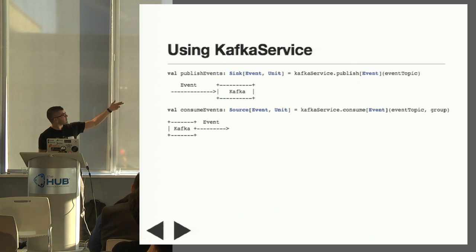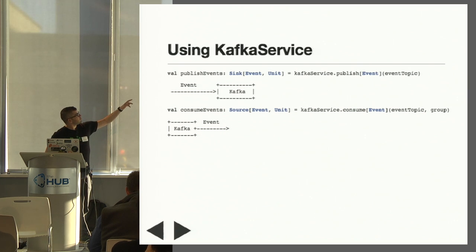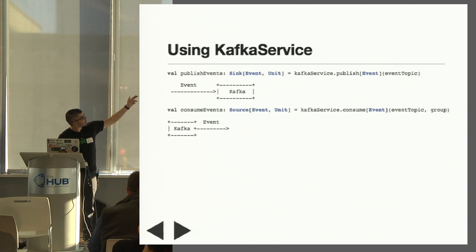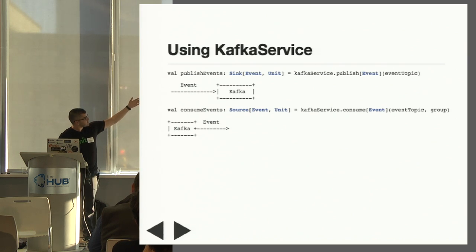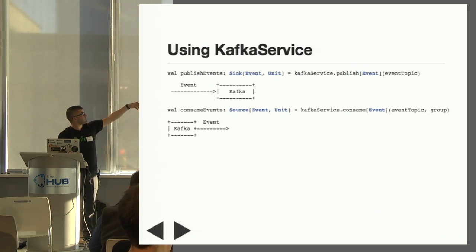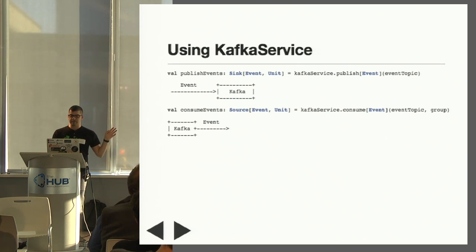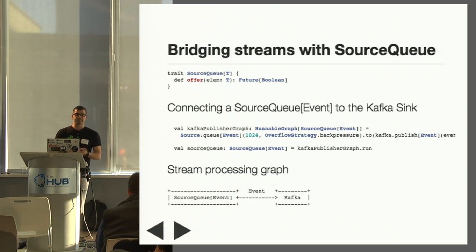I've also added some ASCII art graphs designed to show what these different stream processing graph components look like at the conceptual level. So publish events from the Kafka client — you can see that's a sink. It consumes events, objects of the event type I showed you earlier, and publishes them to Kafka. And consume events is a source — it consumes events from Kafka and emits them to be used by some other component in a stream processing graph. These aren't runnable graphs yet; they're just components of graphs. They have hanging inputs or outputs, so we wouldn't be able to use them to create a running stream processing graph.